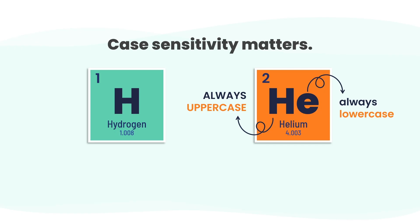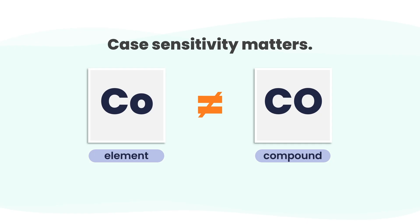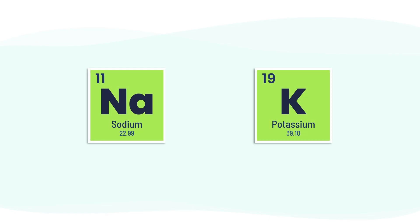Case sensitivity really matters. Take Co and CO, for example. Co with a lowercase o stands for cobalt, a metal element. But C followed by an uppercase O means carbon monoxide, a dangerous gas made of carbon and oxygen atoms. Mixing up uppercase and lowercase completely changes the meaning. And while some symbols are straightforward, like C for carbon and Ca for calcium, others trace back to Latin — like Na for sodium from natrium, or K for potassium from kalium. These older names reflect chemistry's deep roots in ancient languages.